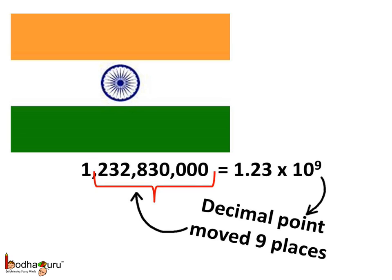Here the point would move to the right by 9 places if we multiply by 10 to the power 9, and it will be the same number — that is, 1,232,830,000.